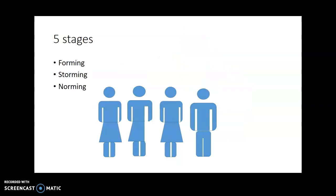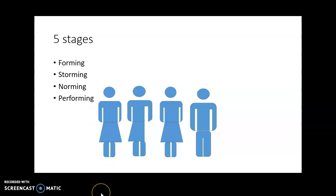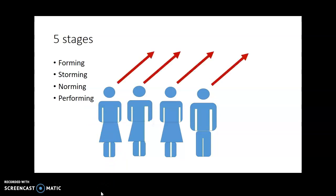Norming occurs when the team has learned to understand all members and they cohere around the goals of the group. Conflict has happened, perhaps has even become normal, and the group has agreed to move towards a clear objective goal. At the performing stage, they understand the processes that are required to complete the group's project.